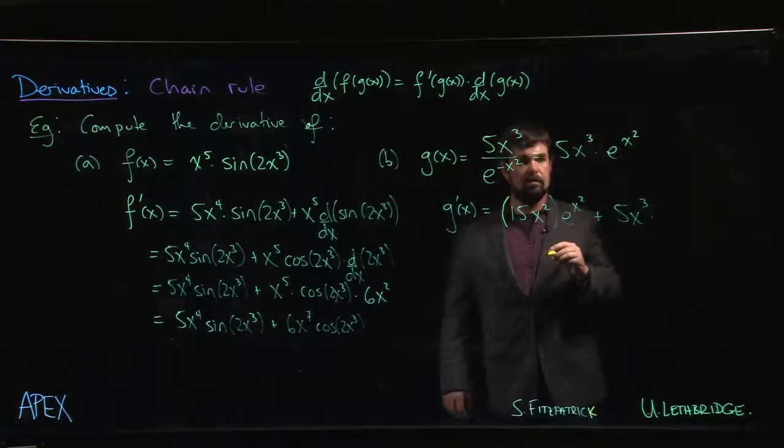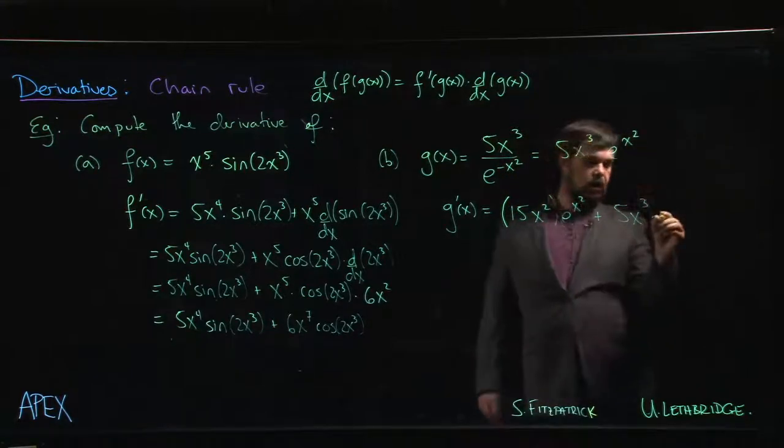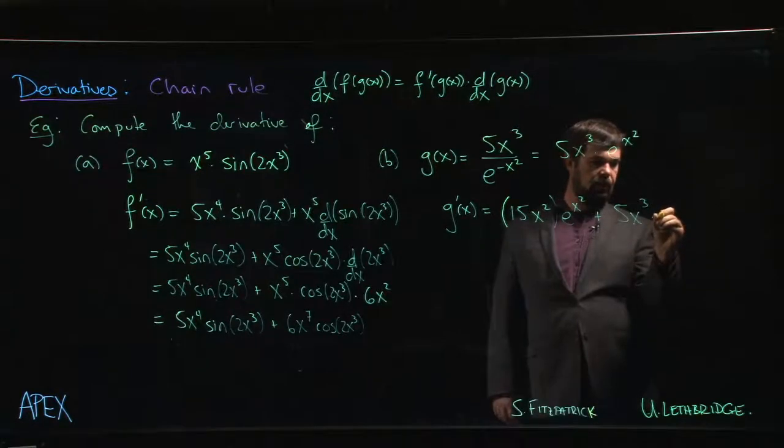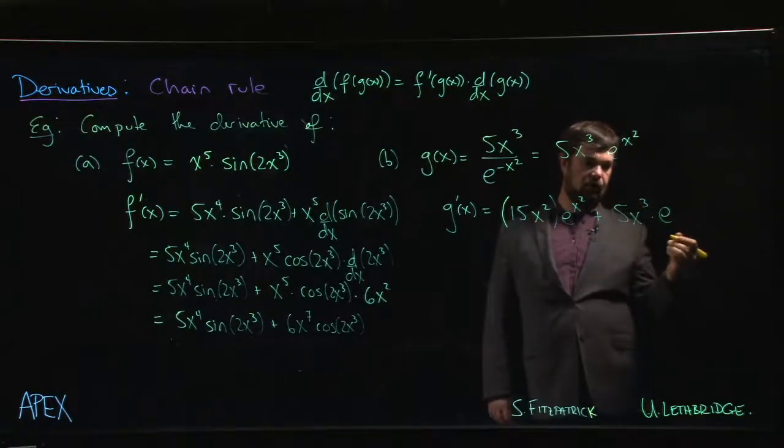So how do we take the derivative of e to the x squared? Well, anytime we take the derivative of an exponential function, we know that nothing happens. The derivative of the exponential is the exponential for the natural exponential.